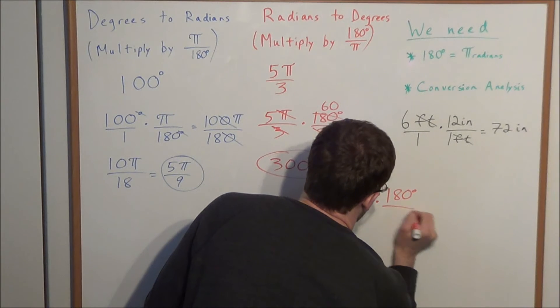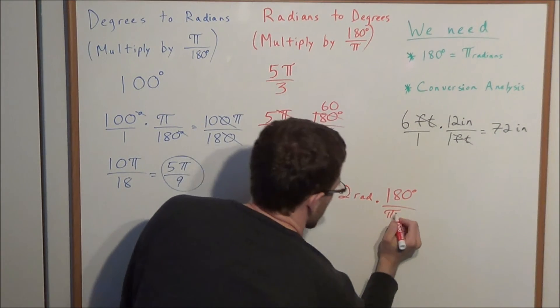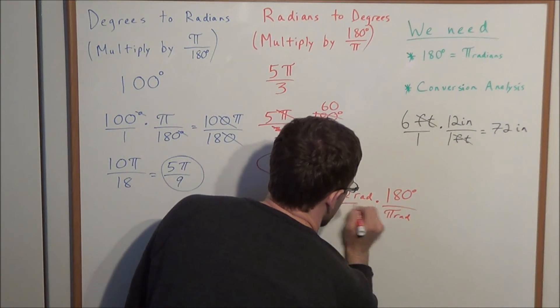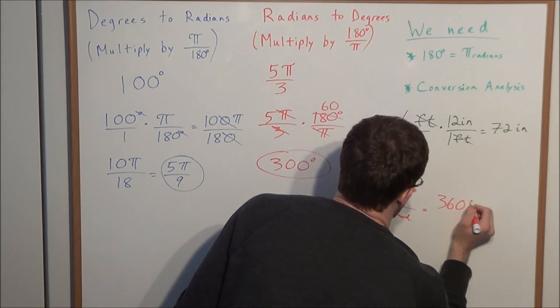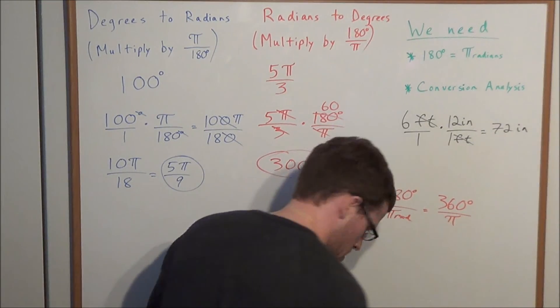So we multiply by 180 degrees over, and remember, this is π radians. So in this sense, the radians will cancel out, and we'll be left with 360 degrees divided by π, which we could evaluate.